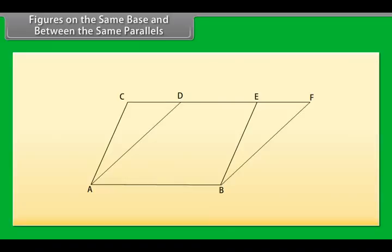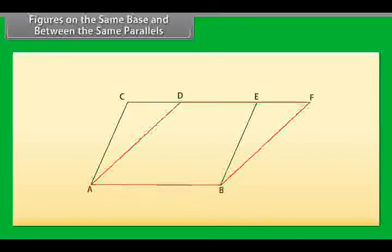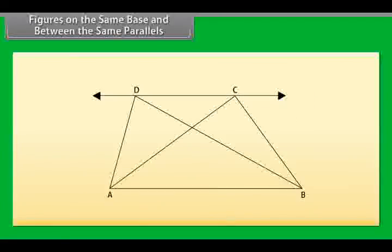Figures on the same base and between the same parallels. Now look at this figure. We can see that parallelogram ABEC and parallelogram ABFD are on the same base, AB. Also, the vertices C and E of parallelogram ABEC opposite to AB, and vertices D and F of parallelogram ABFD opposite to AB, lie on the same line CF, which is parallel to AB. So we can say that both parallelograms lie on the same base AB and between the same parallels AB and CF. Similarly, triangles ADB and ACB both lie on the same base AB and between the same parallels AB and DC.